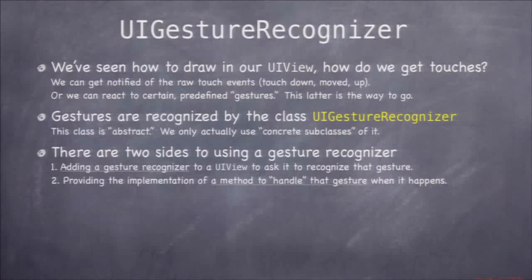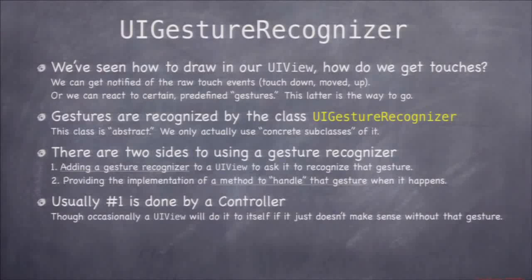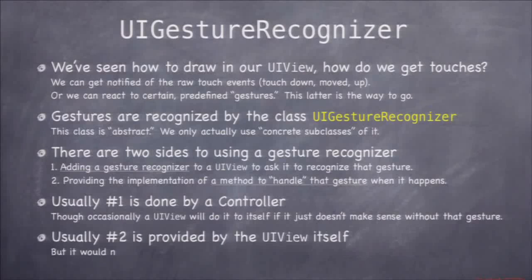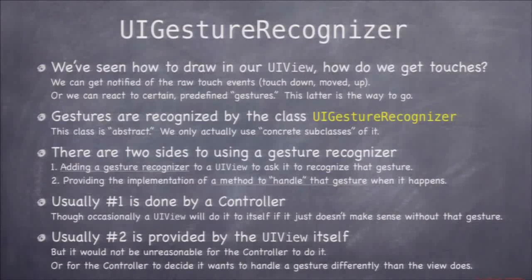Number two is you've got to provide a handler — a method to call when the gesture happens or is happening. If it's a continuous gesture like a pinch or pan, the handler gets called a lot as the gesture changes. But if it's a swipe or a tap, you're just called once. Usually adding the recognizer is done by a controller, though sometimes views add recognizers to themselves. The handler is often provided by the view — so even though the controller adds the gesture recognizer, it tells the system to let the view handle it.